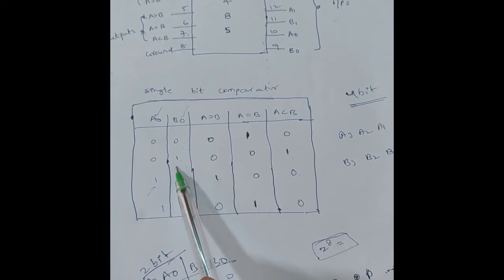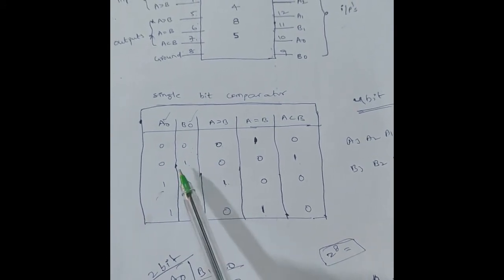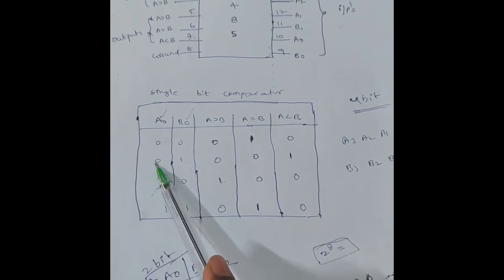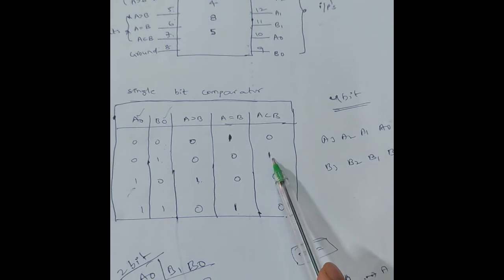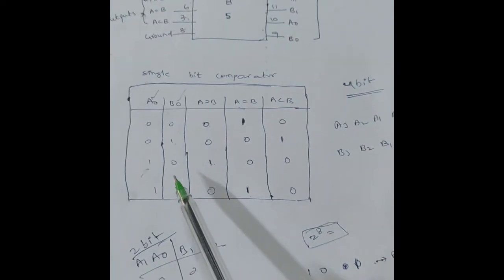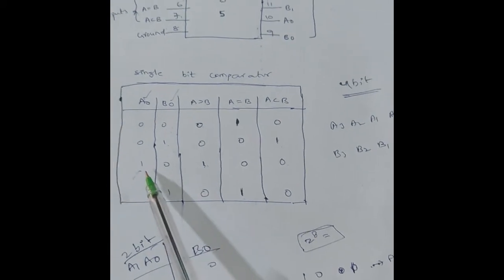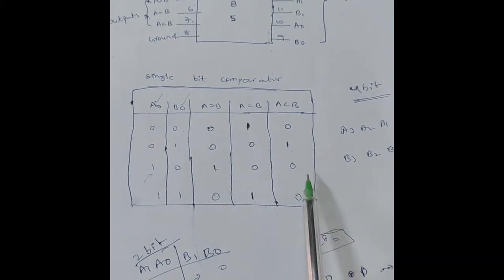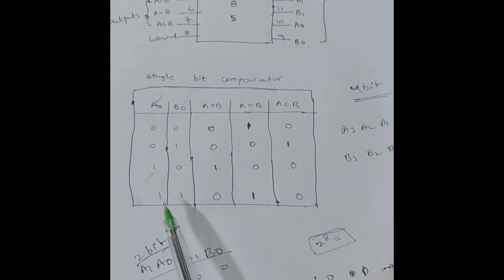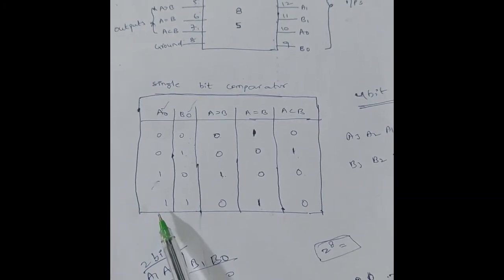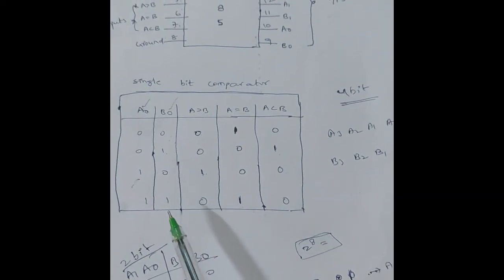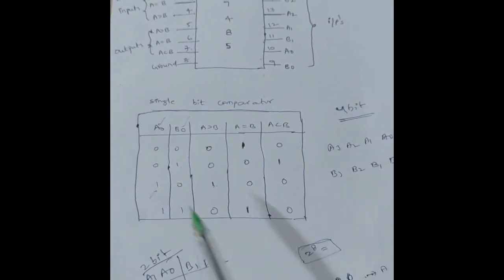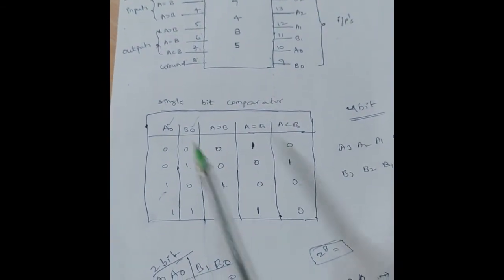For input combination 0 1, the magnitude of B is greater than A, so the output A less than B is 1 and the remaining outputs are 0. For combination 1 0, the magnitude of A is greater than B, so A greater than B is 1. For combination 1 1, both inputs are equal, so A equal to B is 1 and the remaining outputs are 0. This completes the function table of the single-bit comparator.